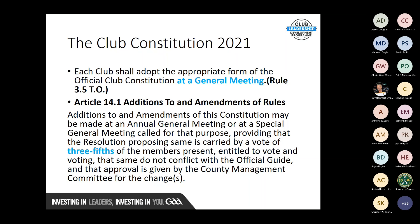You will hear references to the articles of the club constitution. In these slides, some text will be in blue to indicate where changes were made from the old club constitution. Article 14.1 refers to additions and amendments: additions to this constitution may be made at an AGM or special general meeting, providing the resolution is carried by a vote of three-fifths of the members present — previously that was two-thirds. The same must not conflict with the official guide and approval must be given by the county management committee.